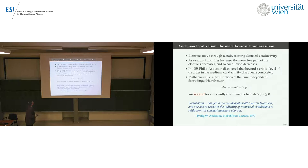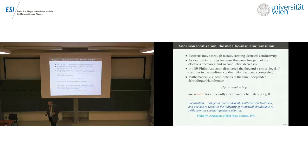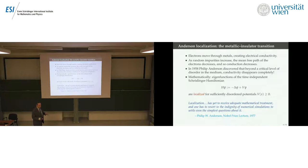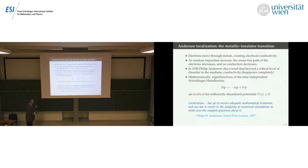Localization is most closely associated with Anderson, who got the Nobel Prize for the metallic-insulator transition based on localization. The rough argument is that electrons traveling through a metallic alloy have their mean free path decreased by impurities, reducing conductivity. You might think it would tail off to zero, but because of complex quantum effects, at a certain critical level of disorder, conductivity disappears completely — the electrons don't go anywhere, they localize. Mathematically, that means the Schrödinger Hamiltonian is localized if V is sufficiently disordered.